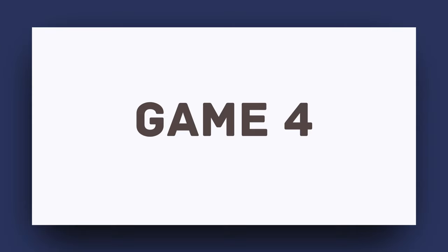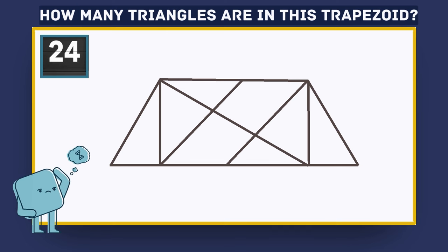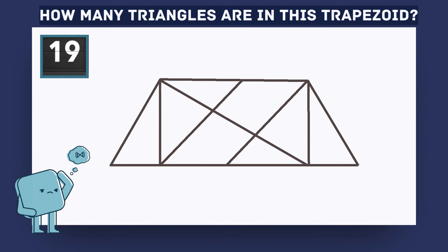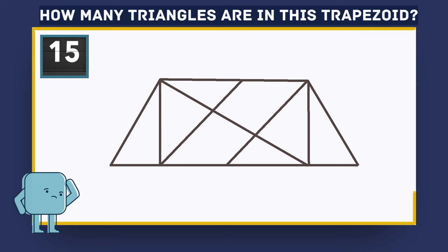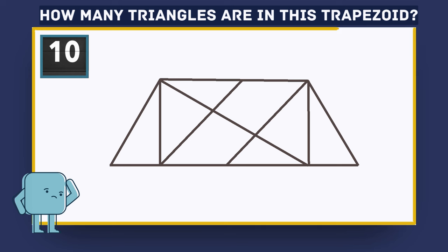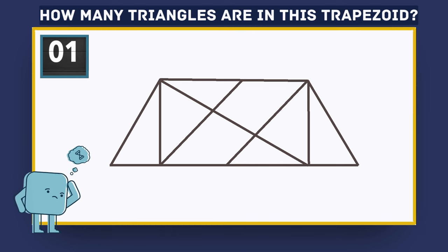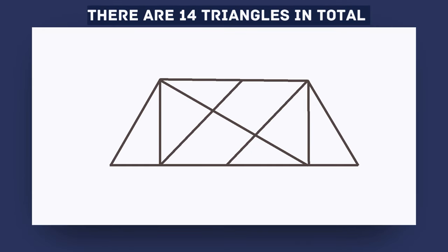Game 4. How many triangles are in this trapezoid? There are 14 triangles in total.